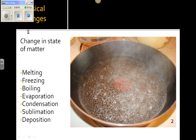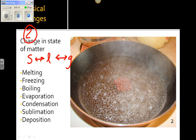A change in state of matter is a second example of a physical change — going from solid to liquid, back and forth, or to gas. Here we have an example of water boiling. Steam and liquid water are still water, but there's a difference in physical state. So melting, freezing, boiling, evaporation, condensation — all examples of physical changes. Sublimation is a change that's a solid directly to a gas, such as in dry ice. You skip the liquid phase and go directly to a gas, so that's called sublimation.